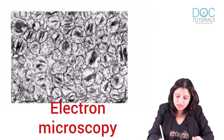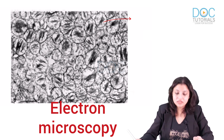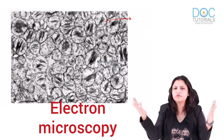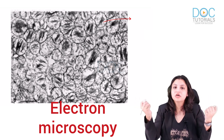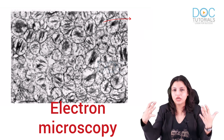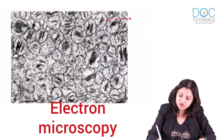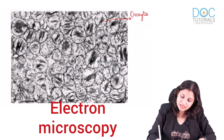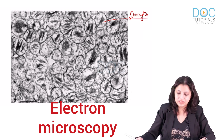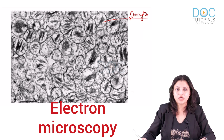Now look at this image. This is a cell with a lot of mitochondria grouped together. Whenever any cell starts acquiring a lot of mitochondria, or whenever a cell has a lot of mitochondria in it, such cells are called oncocytes.